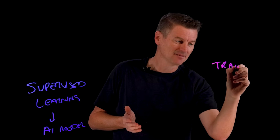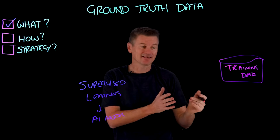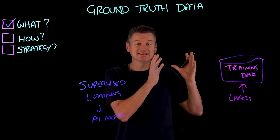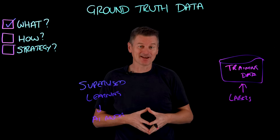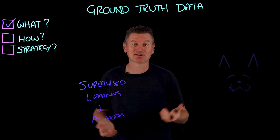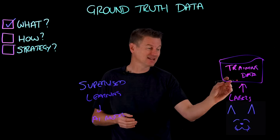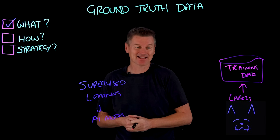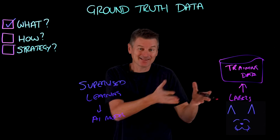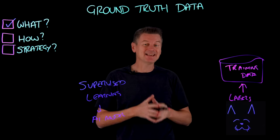That ground truth may be some kind of training data, and that training data is filled with labels. Those labels describe what each data component represents. So if we're using supervised learning to train an AI model to recognize images of cats, the training data set would include pictures of cats, and those pictures would include labels for various features such as the cat's eyes, the cat's ears, or the cat's whiskers. These annotations, these labels, teach machine learning algorithms how to identify similar features with new unseen image data.